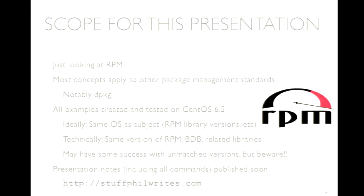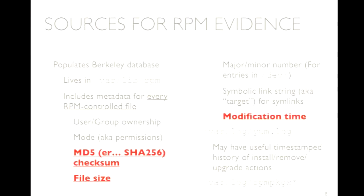So where do we go to get the evidence? We need to find out where the evidence is — if we don't collect the right evidence, we're selling ourselves short. The majority of what we'll talk about today lives in a Berkeley database that generally sits in the /var/lib/rpm directory — that's the default, and almost every installation I've ever seen uses that location. These database files contain metadata for every single file deployed as part of an RPM package.